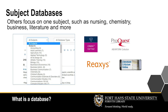Subject databases focus on one broad topic or discipline. They have specialized search features tailored to that subject and are the best sources for scholarly, peer-reviewed articles from the top journals in that field. Our subject databases include CINAHL for Nursing, the Chemistry Database Reaccess, the ABI Inform Collection for Business, Literature Criticism Online, and many more.